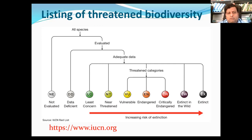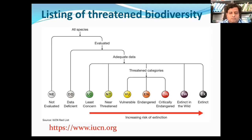Extinct in Wild, with notation EW, is a category containing those species whose members survive only in captivity or in artificial support populations far outside the geographic range where they existed — meaning they are only present in zoos, domesticated, or bred as pets. Simply put, they cannot be found in the wild; that is known as Extinct in Wild.